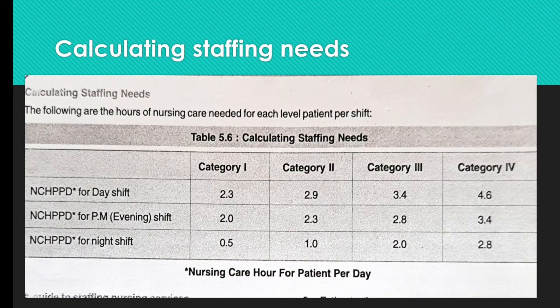When calculating staffing needs, the following are the hours of nursing care needed for each patient level per shift — expressed as NCHPPD, nursing care hours per patient day. For the day shift: category 1 requires 2.3 hours, category 2 requires 2.9 hours, category 3 requires 3.4 hours, and category 4 requires 4.6 hours.